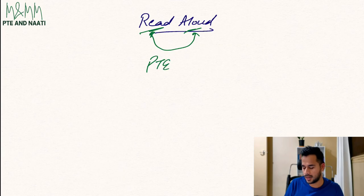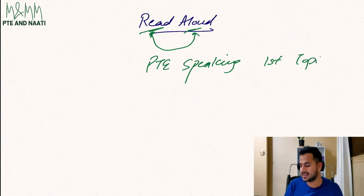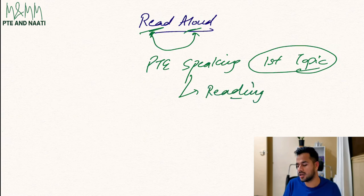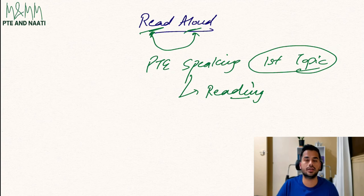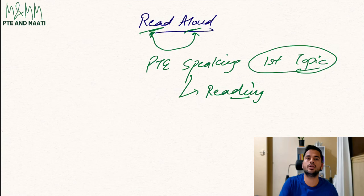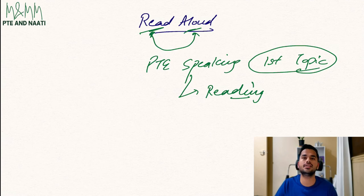Since it's part of speaking, it's your very first topic in the exam. But it doesn't mean you only get marks in speaking. Alongside speaking, you also get marks in your reading section. The reason Pearson gives you marks in reading is that since there's a paragraph you are reading and then speaking out, Pearson can figure out how good your reading skill is as well as your speaking skill.